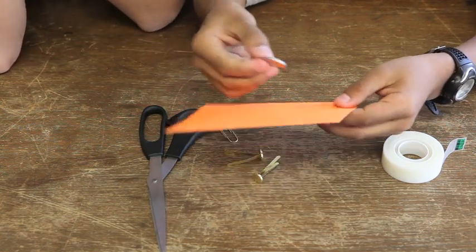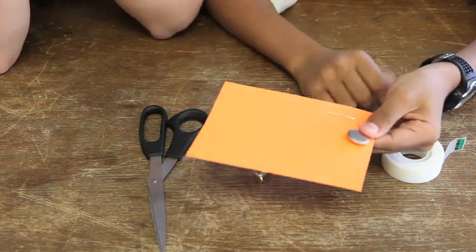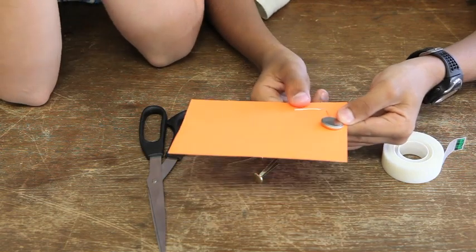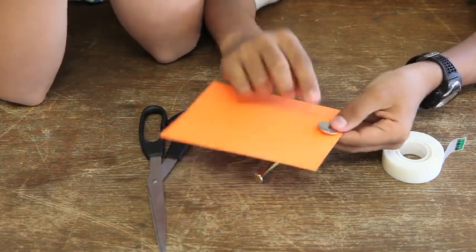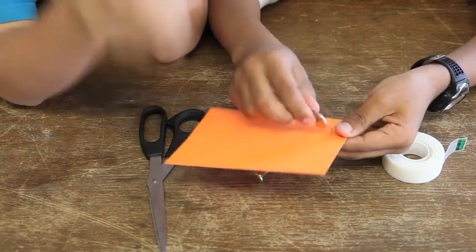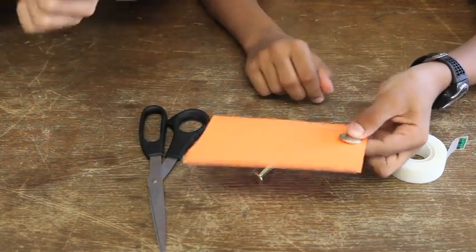Then you take one of the coin batteries. You have to be careful which side, because if it's on the wrong side, then the light might not turn off when the switch is turned.